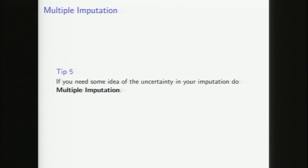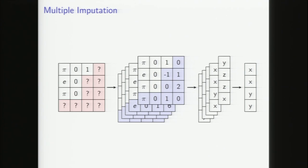This leads to another tip: if you care about uncertainty not just in the missing values but in your final result — after imputation you then run another analysis or machine learning algorithm — there's a technique called multiple imputation. You learn the distribution of your data, sample from it to create n copies of what the imputed dataset might look like, run your analysis n times, and then either aggregate the final result for a more robust estimate, or look at all the different copies.